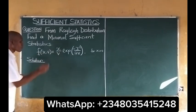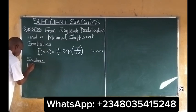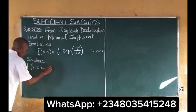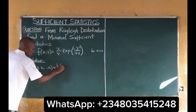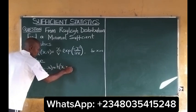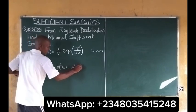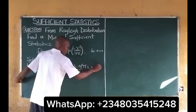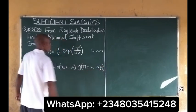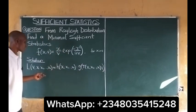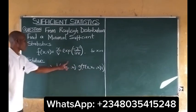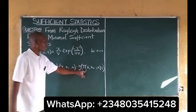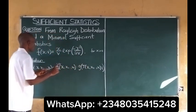For a statistic to be sufficient, it must meet this criteria. The likelihood function L(v; x1, x2, ..., xn) will be equal to h(x1, x2, ..., xn) multiplied by g(T(x1, x2, ..., xn), v). This part is independent of the parameters from the distribution, while this part is a function of the distribution including the parameters given.